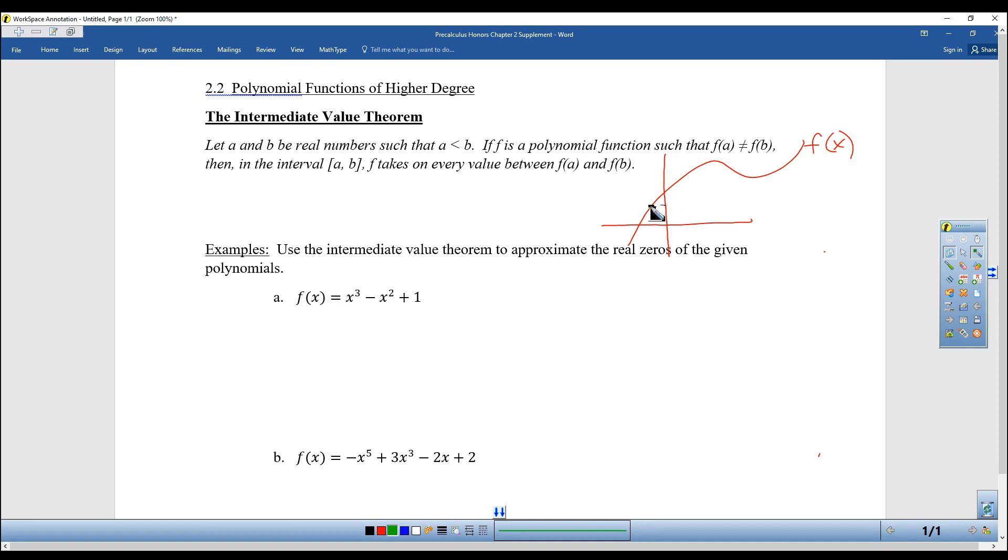So let's say that A is here, and this point right here would be A comma, and its Y value would be F of A. And then let's say that this is B, and this would be the point B comma F of B. The way I've drawn it, A is definitely less than B, which was the first requirement, and the two Y values, F of A, is not equal to F of B.